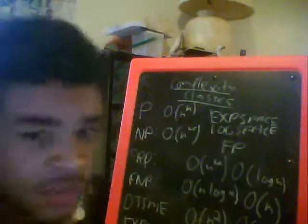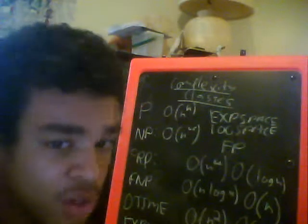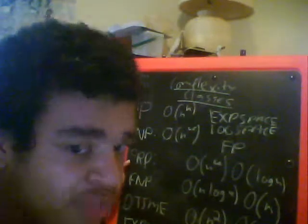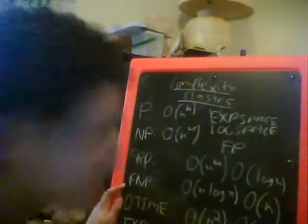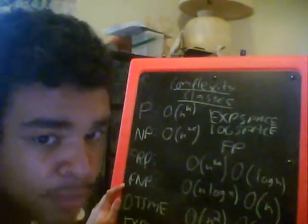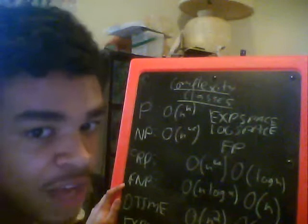And NP is basically very similar to that P class, except it has non-deterministic Turing machine in polynomial time. There's also the randomized polynomial time, which is a little more advanced, we'll talk more about those later. And then we have FNP, which is basically NP problems but they're functions. It's the function analysis of the NP complexity class.